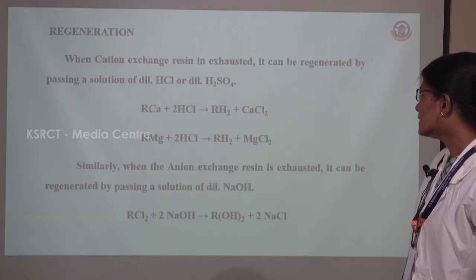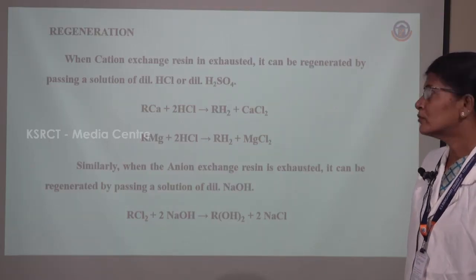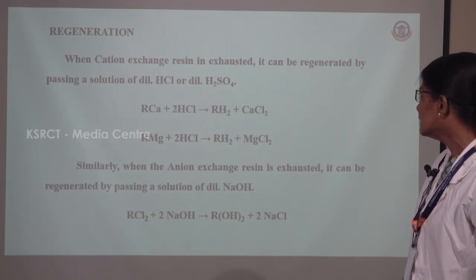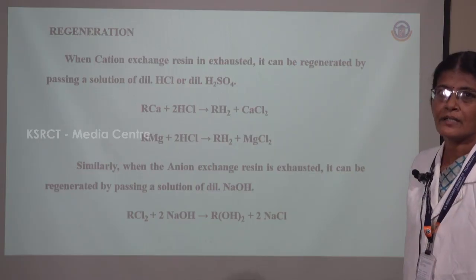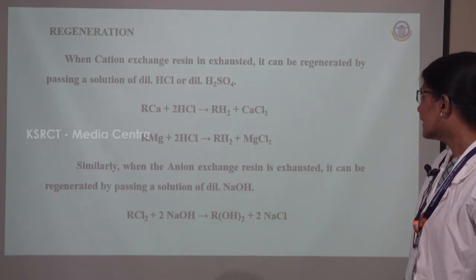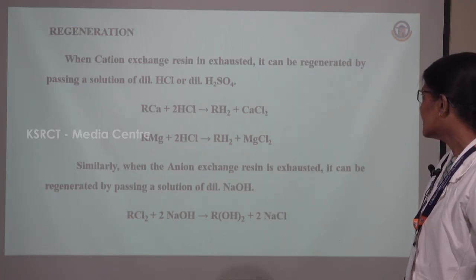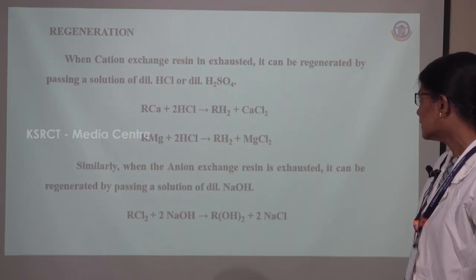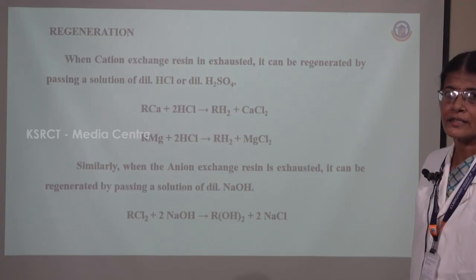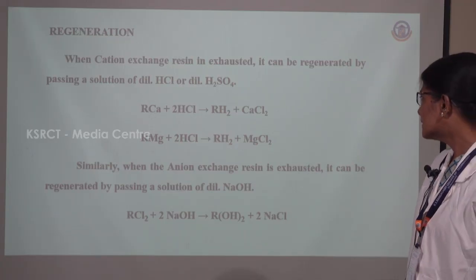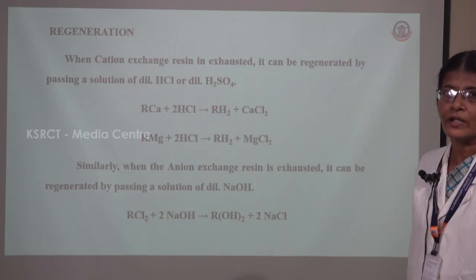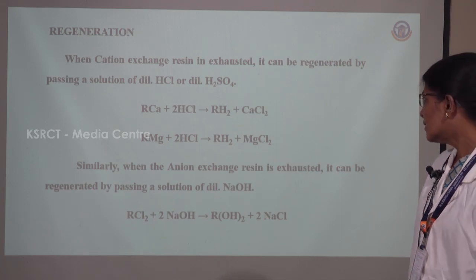After a particular stage, the bed will be exhausted and regeneration must be performed. The cation exchange resin can be regenerated by passing dilute HCl or dilute H₂SO₄. The reactions are: RCa + 2HCl → RH₂ + CaCl₂; RMg + 2HCl → RH₂ + MgCl₂. Similarly, if the anion exchange resin is exhausted, it can be regenerated by passing dilute NaOH solution: RCl₂ + 2NaOH → ROH₂ + 2NaCl.